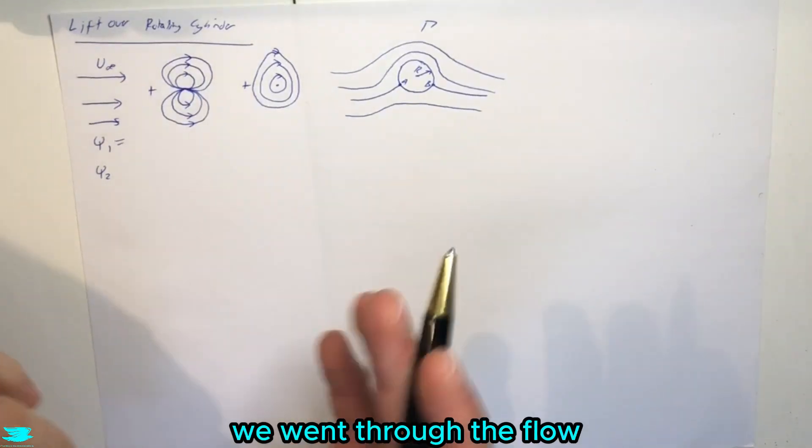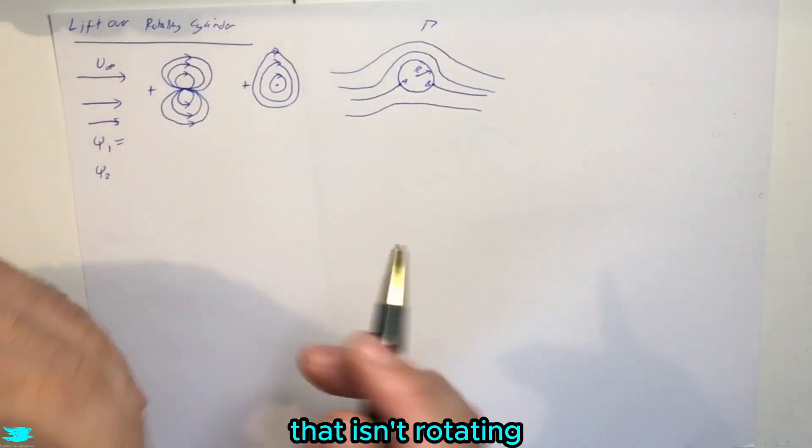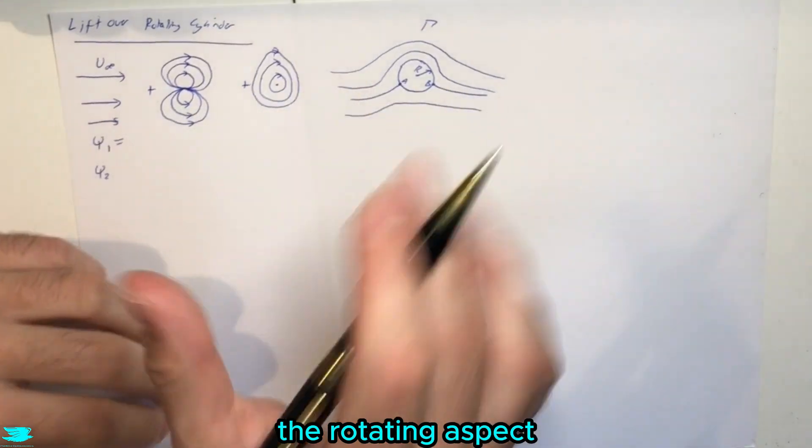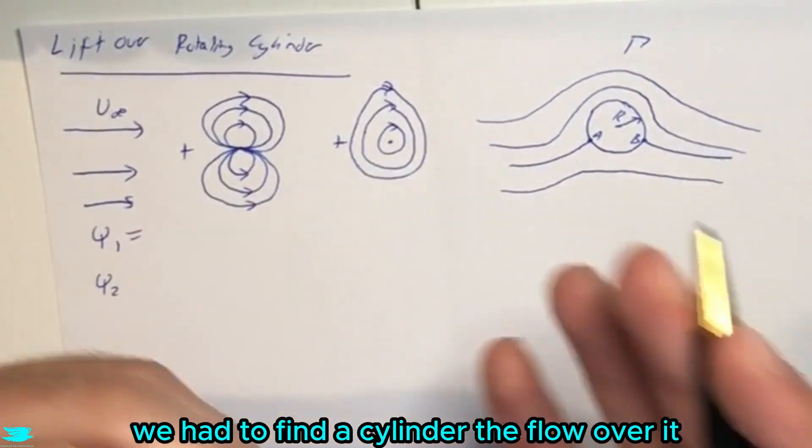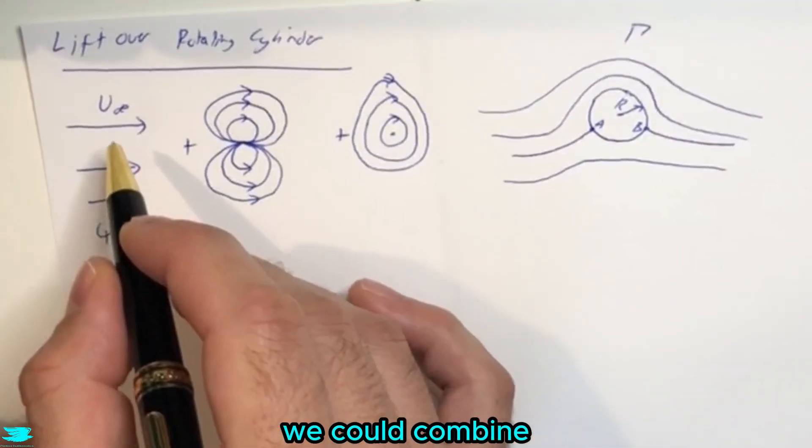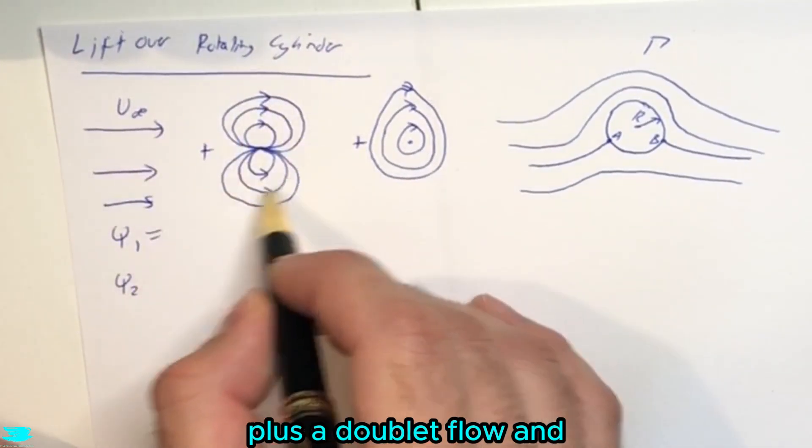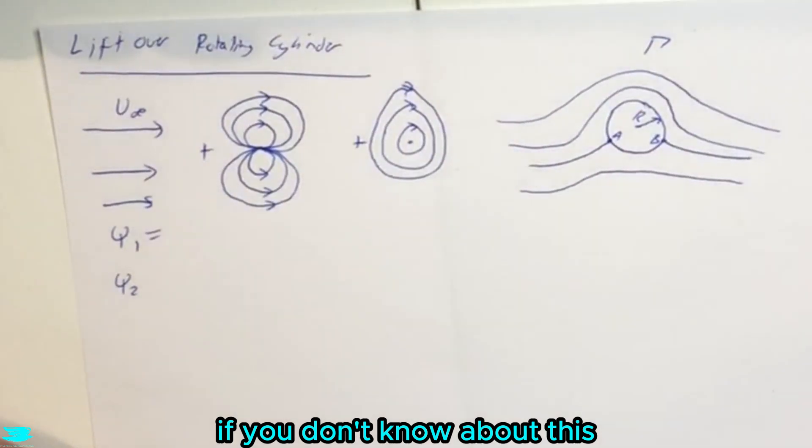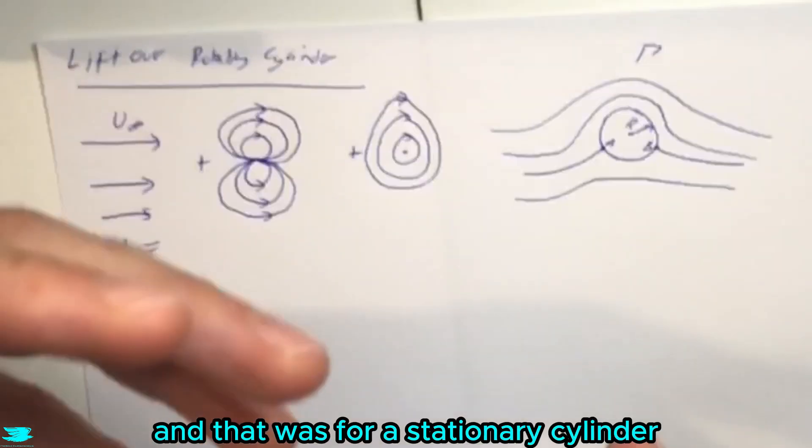In last week's video, we went through the flow over just a regular cylinder that isn't rotating. Now we'll be going through the rotating aspect. In the last video, we had to find a cylinder, the flow over it. We could combine the potential solution for a uniform flow plus a doublet flow. And if you don't know about this, check out this video here where we went through it. And that was for a stationary cylinder.